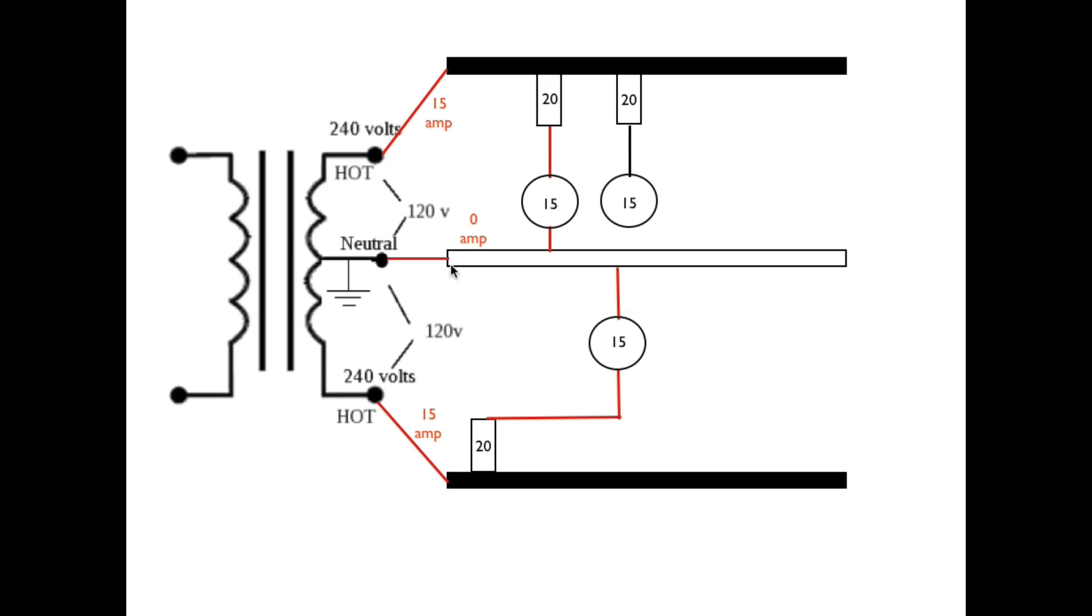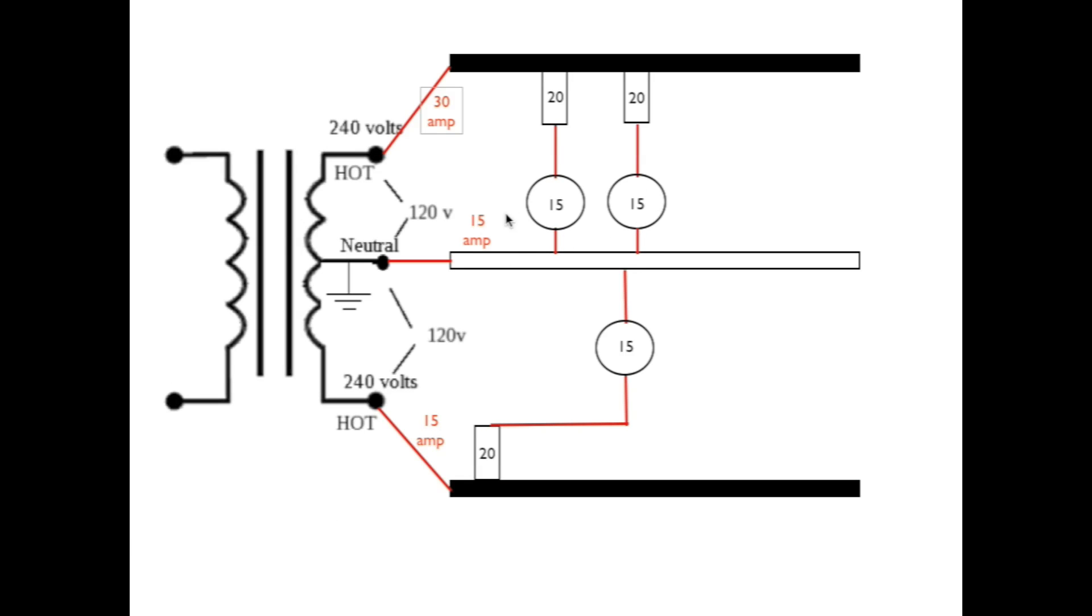Okay, now let's unbalance the load. I've added, everything else is the same, but I have added another 15 amp load to this panel. Now, this makes an unbalanced load because I don't just have power coming through here, here, and up to here, and back to here. I actually have another load here that is not complemented by a like load on the opposite side.